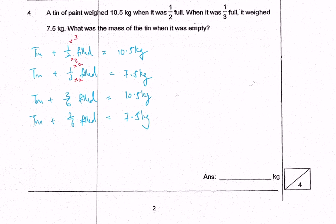Look at this. Now you can easily compare it because we can subtract each other and you realize that 1 over 6 filled is actually 10.5 kg minus 7.5 kg giving me 3 kg.